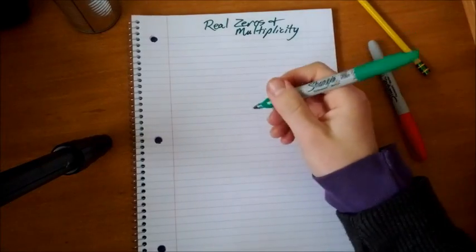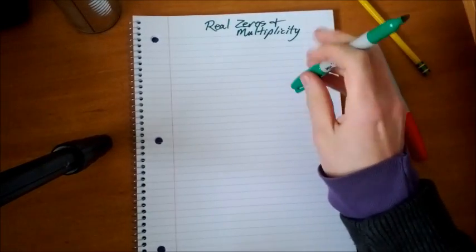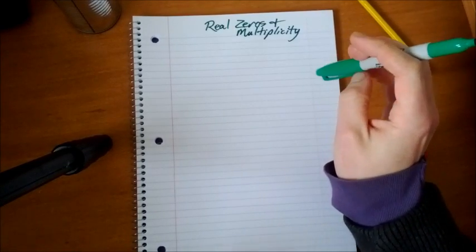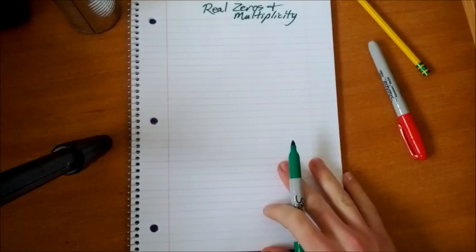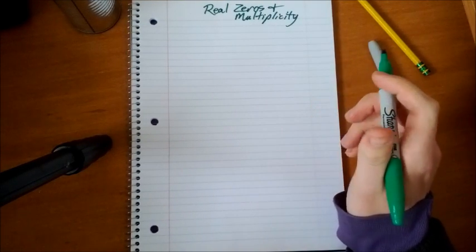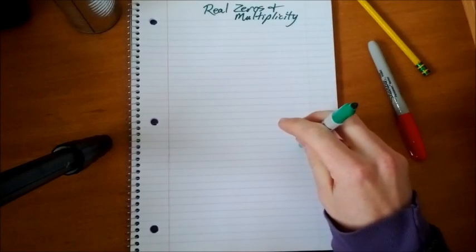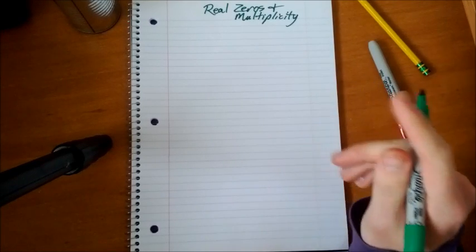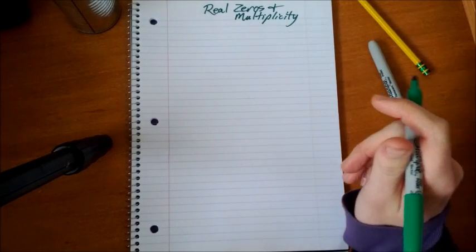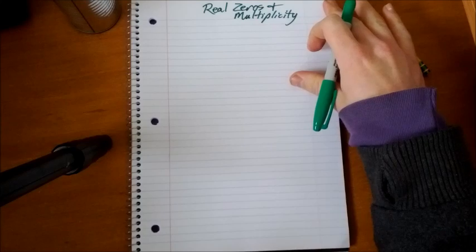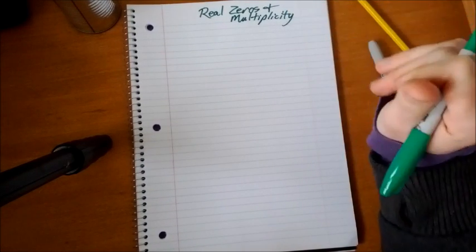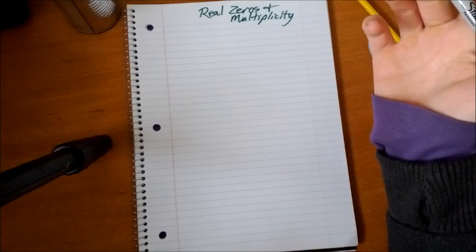Hello and welcome to my lesson in precalculus. I tried making a lesson before this and realized I had centered the paper incorrectly and my video was rendered useless. So I'm going to try again. Today we're going to talk about real zeros and multiplicity, which is a part of polynomial functions.